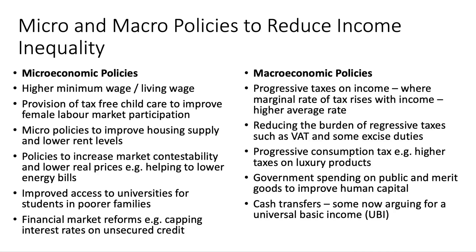On the macro side, governments committed to cutting inequality will typically use progressive taxes on income. In the UK, the marginal rate of tax goes up from 0% to 20% to 40% to 45%, so the average rate of tax rises with income. People on £100,000 a year pay substantially more income tax than somebody on £20,000. A government could decide to make the tax system more progressive — perhaps by introducing a higher marginal rate of tax. They could also cut some regressive taxes such as excise duties and VAT, which have a regressive effect on income distribution, and cutting those might have a similar effect to making direct taxes more progressive.